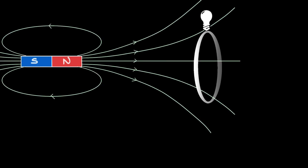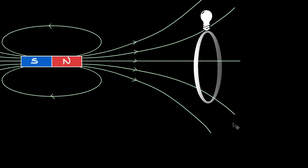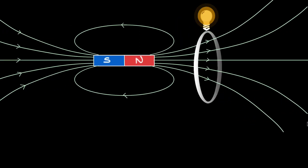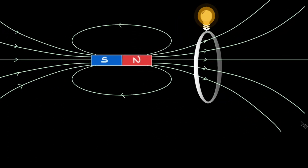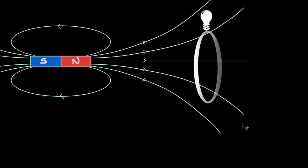Looking at the magnetic field lines, when we move the magnet towards and away, we can see the lamp glow. This led Faraday to conclude that whenever magnetic flux through the coil changed, there was some EMF induced in the coil. It was also observed that the bulb glowed brighter when the magnet was moved faster towards or away from the coil.